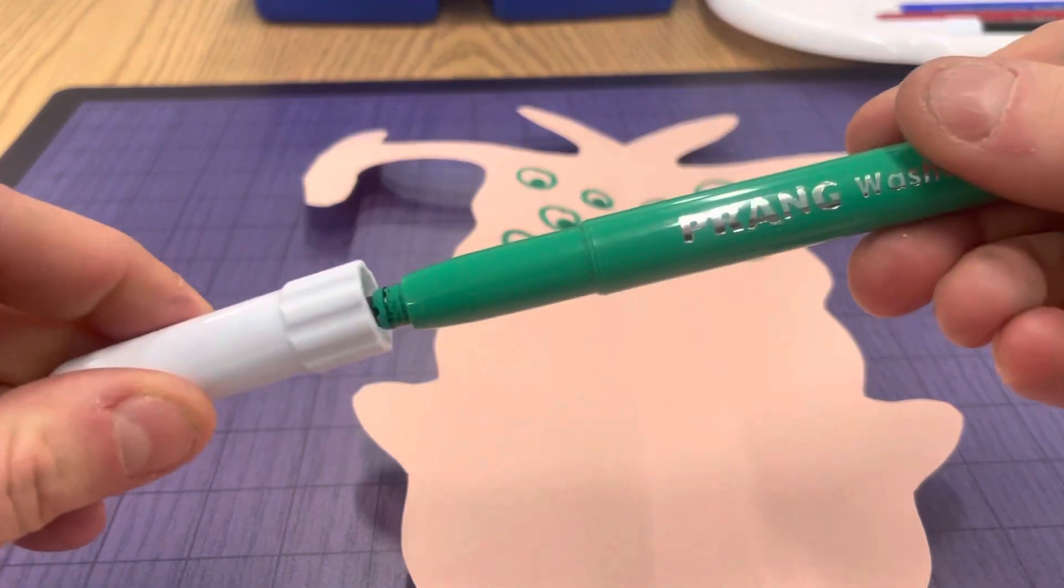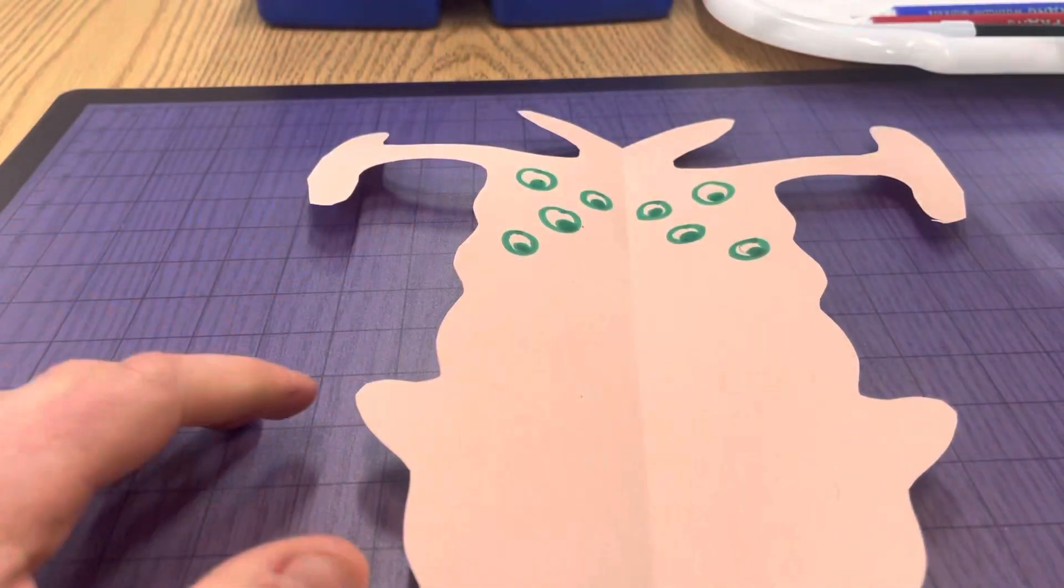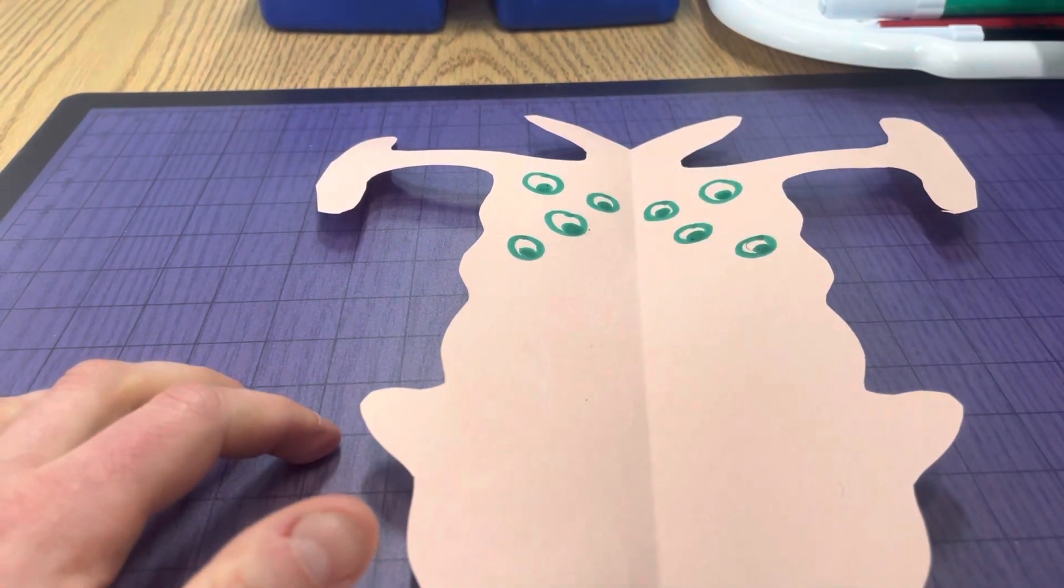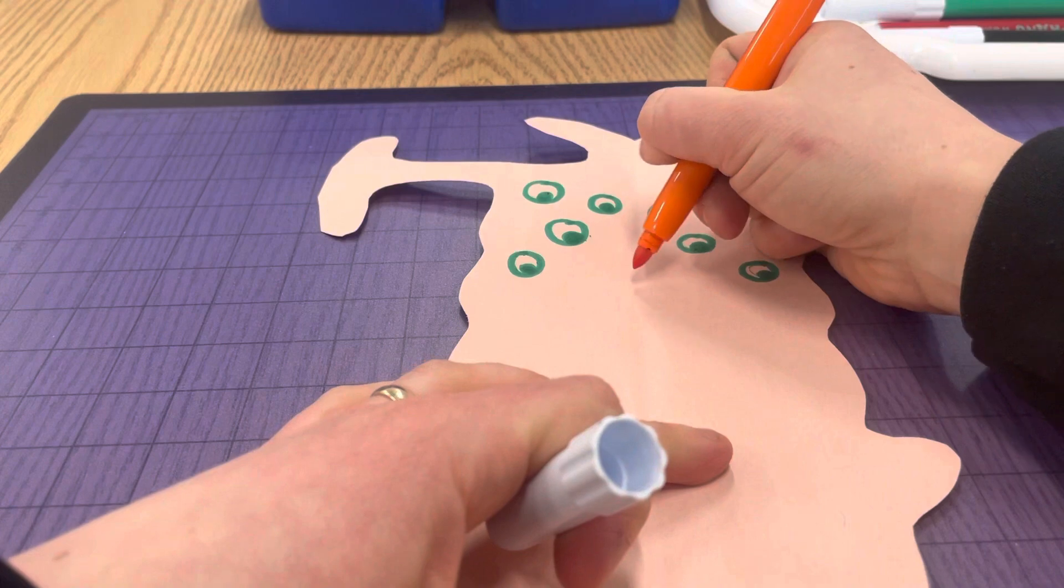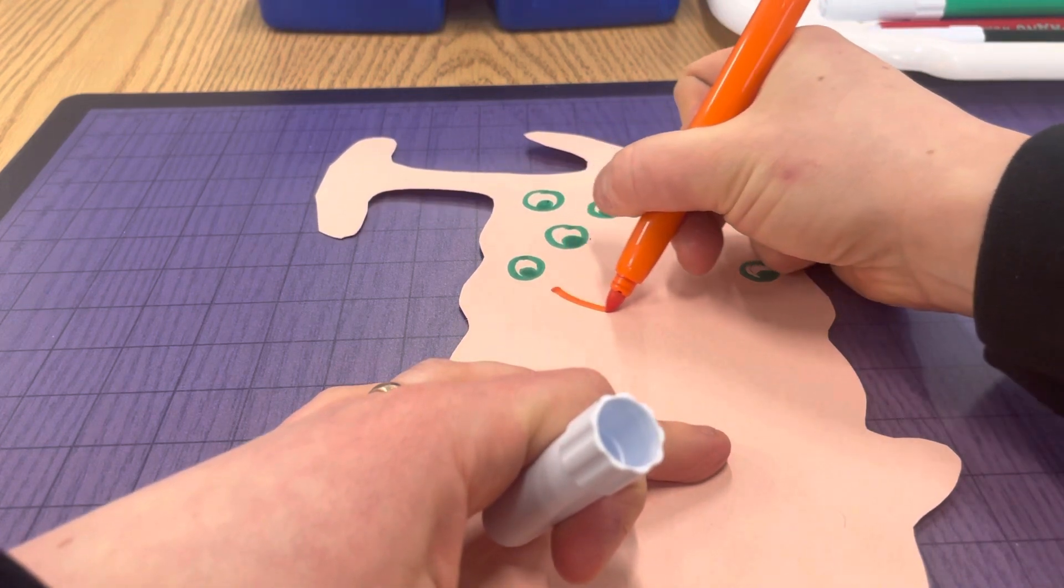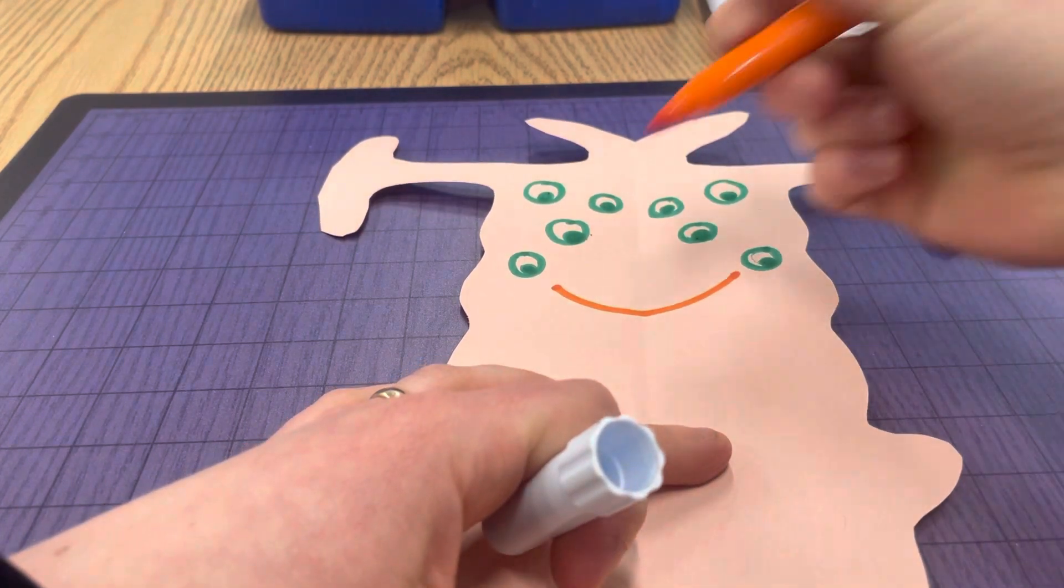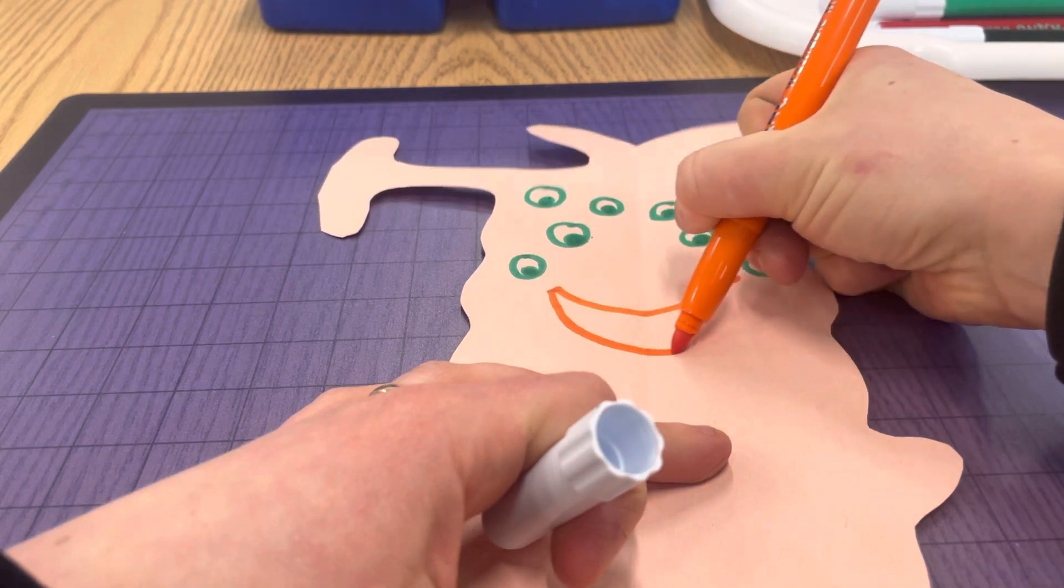So if you want to change colors, go ahead, put the cap on tight, listen for the click, and then put it back in the tray. Okay. So I want mine to have a really big smile. And I cross the line of symmetry there.